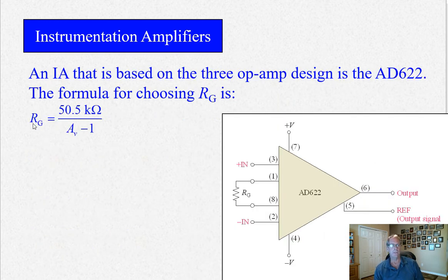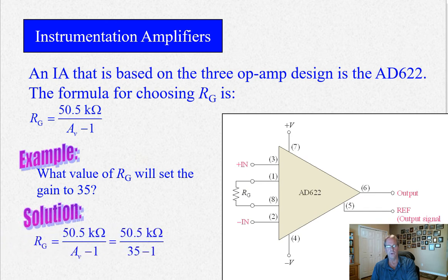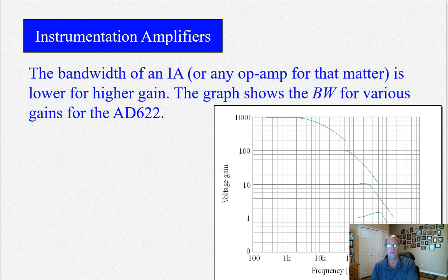Here's the formula. Gain set resistor is, in this case, with this particular AD622, that's an actual part, it's 50.5K divided by AV minus 1. So a little example here, what value of RG will set the gain to 35, just put 35 in there, you end up with 1.5K. So you get a gain of 35.